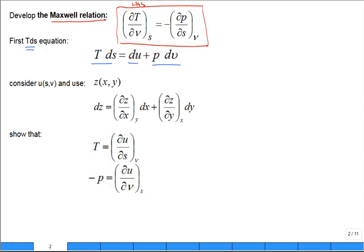Entropy was a new property in Thermo 1, and we related it to changes in other properties. Then just think about mathematics. Think about U as a function of S and V, or some property Z as a function of X and Y. So in general, DZ equals through the chain rule.